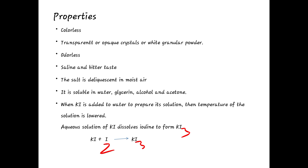Properties of potassium iodide: it appears as colorless transparent or opaque crystals, or white granular powder. It is odorless with a saline and bitter taste. The salt is deliquescent in moisture. It is soluble in water, glycerine, alcohol, and acetone.